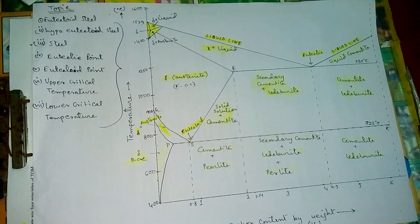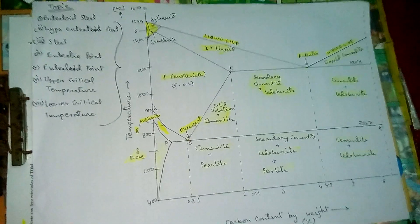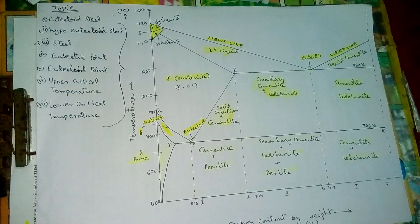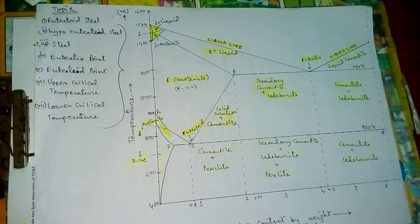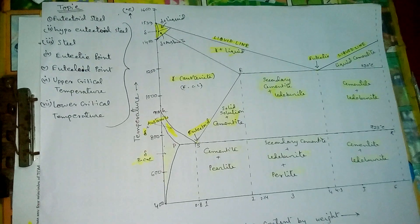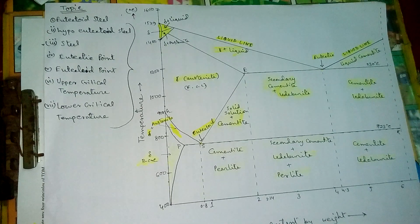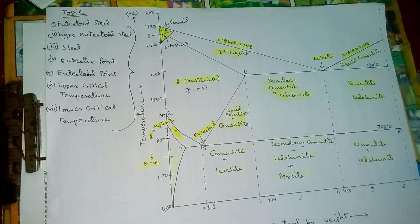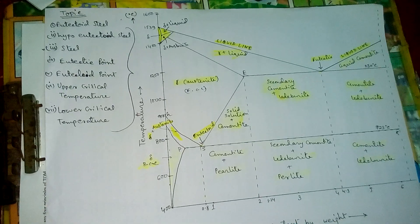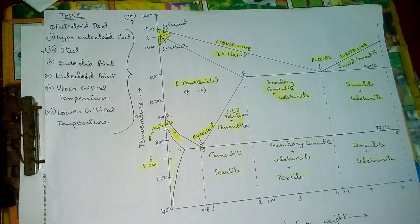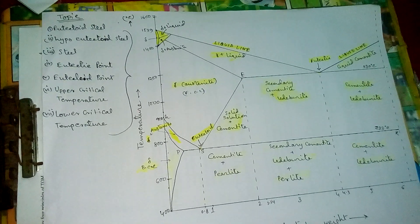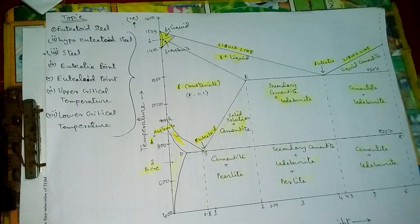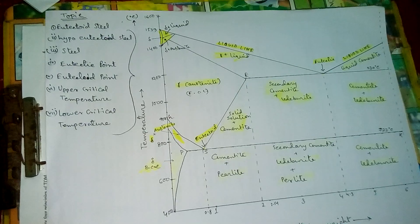An alloy containing 0.8% carbon is called eutectoid steel. An alloy with less than 0.8% carbon is called hypo eutectoid steel. Please note clearly: alloy containing 0.8% carbon is eutectoid steel, and alloy with less than 0.8% carbon is called hypo eutectoid steel.